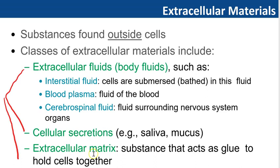The extracellular fluid or body fluid examples are interstitial fluid — the fluid which can be found between the cells — blood plasma, which is the fluid of the blood, and cerebrospinal fluid, which is the fluid surrounding the nervous system organs around the spinal cord and brain. The second class of extracellular materials is cellular secretions, such as saliva and mucus. The third class is extracellular matrix, which is a substance that can act as glue to hold cells together.